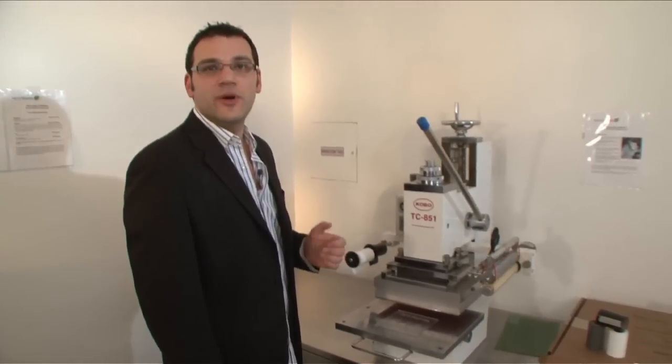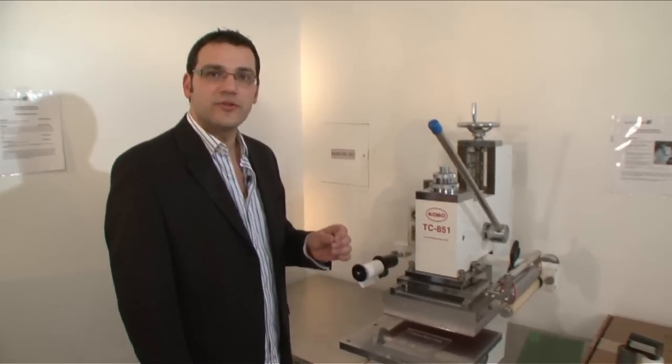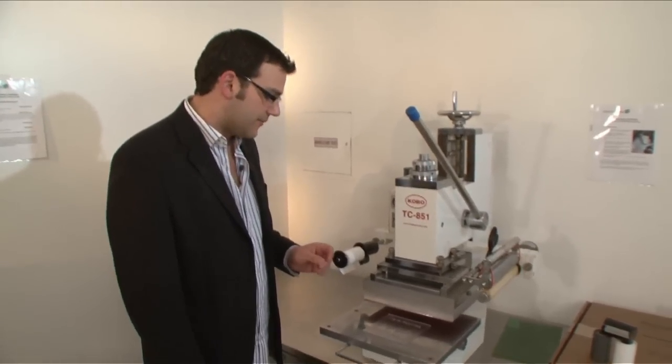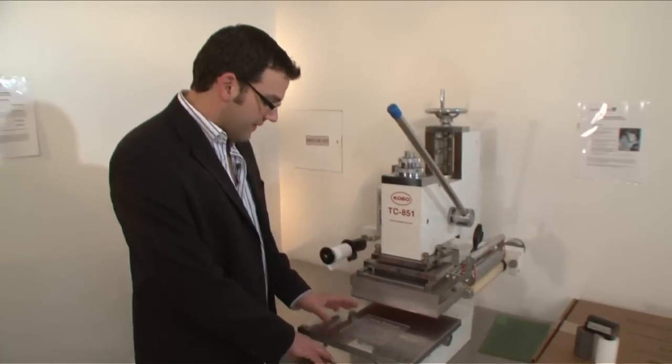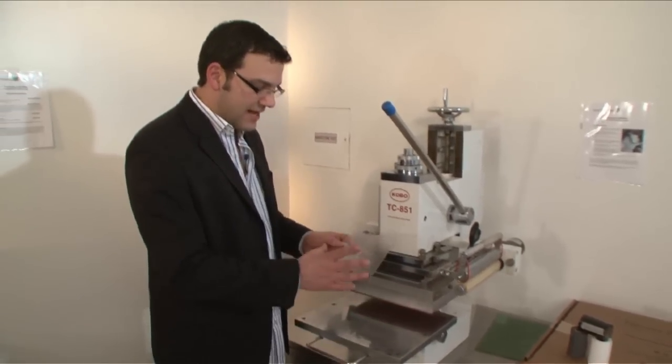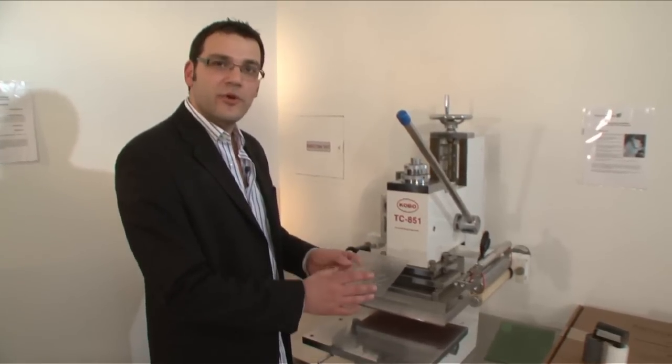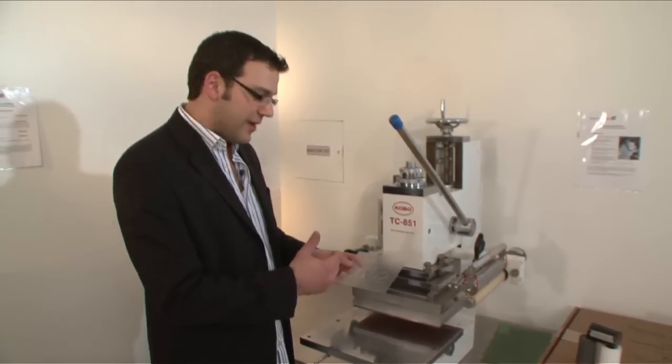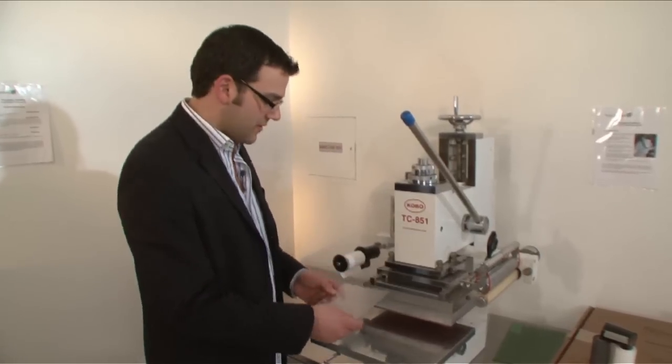Okay. Here we have the Kobo TC 851 hot stamp unit. The Kobo is used to apply color to the raised tactile portion of your sign. Typically the last step in the process. What we see here is we actually have a sign that does not have color applied to the surface of it. You can hot stamp directly to the photopolymer or if you have a surface painted sign, you can hot stamp directly to the painted surface.